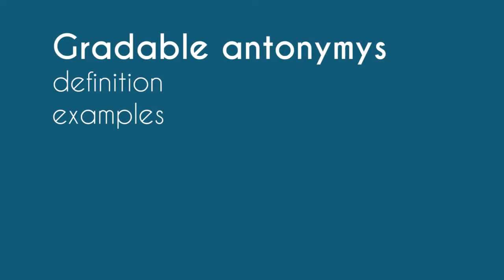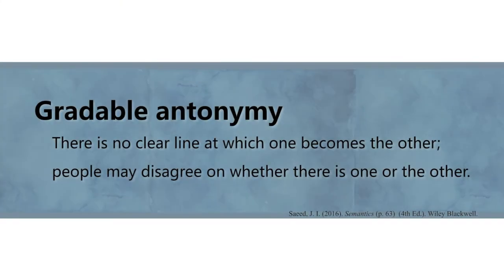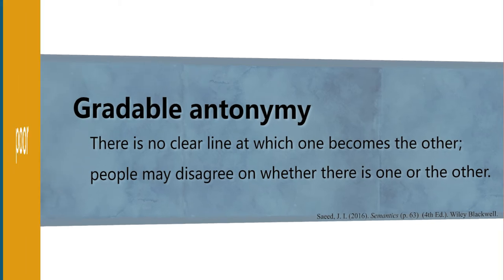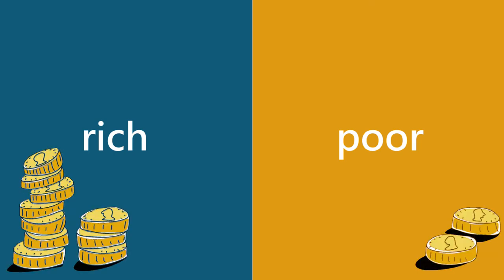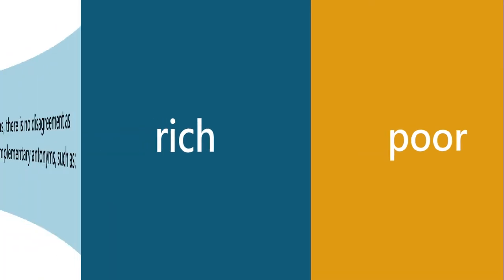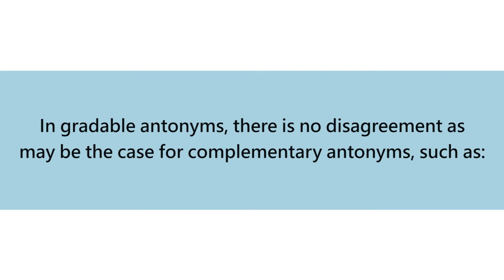These are called gradable antonyms. In gradable antonyms, you can grade them and there is a gradual transition from one to the other. Another example is rich and poor. If you're rich, you're not poor. And if you're poor, you're not rich. But if you're not rich, it could also be that you're not poor — you're neither rich nor poor. In gradable antonyms, there is no such clear-cut disagreement as there is with complementary antonyms.